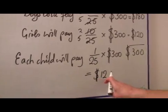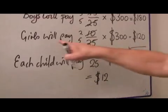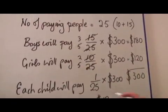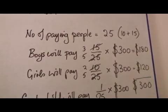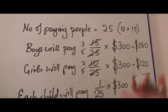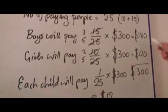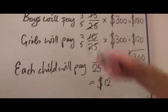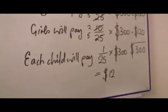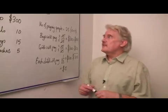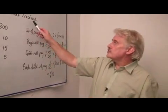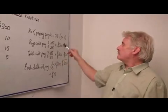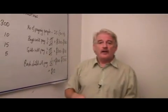So each pays $12, so the girl will have to go around and collect $12 from each of her friends. The boy will have to collect $12 from each of his friends. And they will then pay to the teacher for the cost of the trip, the $300. So this is how we can use fractions to evaluate the amount of money each would have to pay on the trip.